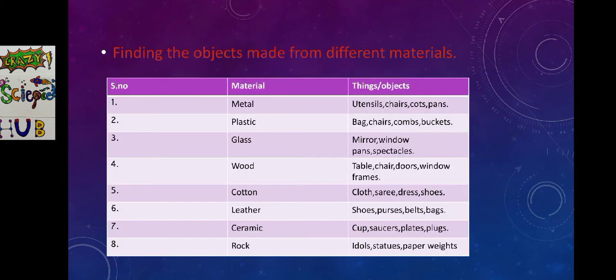Now we are going to do the second activity. This activity is meant to find the objects made from different materials. We are using metal to prepare utensils, chairs, carts, pans. And we use plastic to make bags, chairs, combs, buckets. Glass for mirrors, window panes, spectacles.